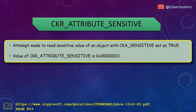CKA_SENSITIVE prevents sensitive information from being read. If an attempt is made to read a sensitive value of a sensitive object, CKR_ATTRIBUTE_SENSITIVE is returned. The value of CKR_ATTRIBUTE_SENSITIVE is 11 and can be read about on page 93.